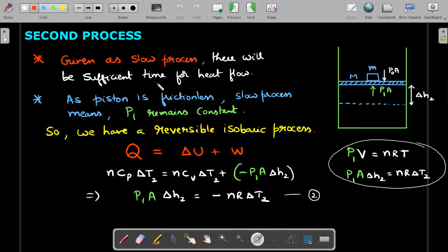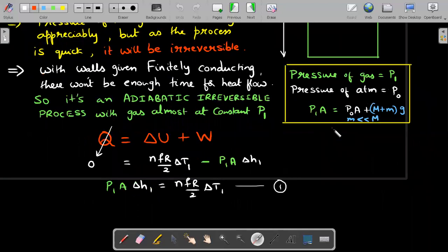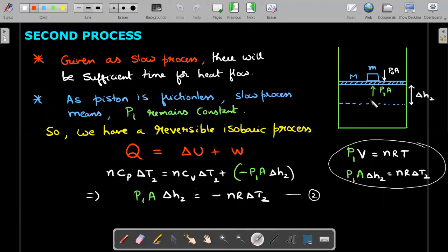Given as a slow process, there will be sufficient time for heat flow. Since the piston is frictionless, slow process means P1 remains constant. If you draw the FBD at every instant, net force should be zero, which means the pressure force equation is valid throughout. So pressure remains constant, heat is allowed to flow, and it is a reversible process because it's a slow process. This time we have a reversible isobaric process.